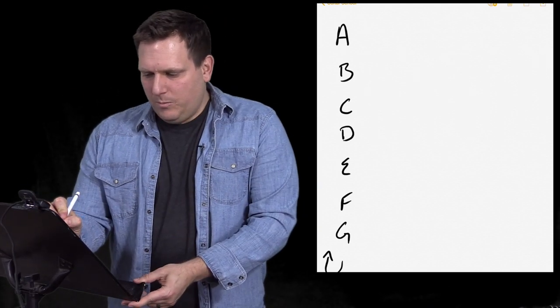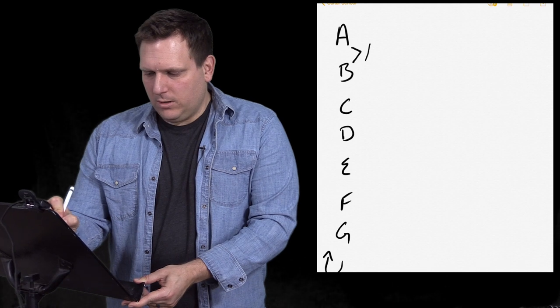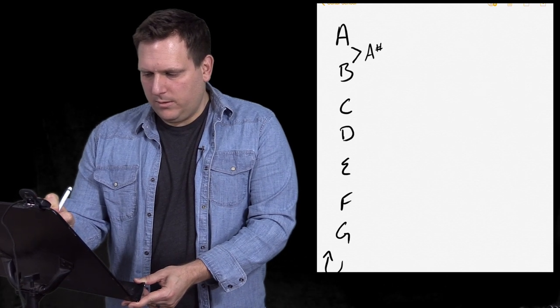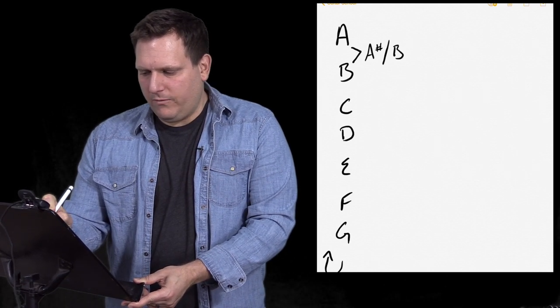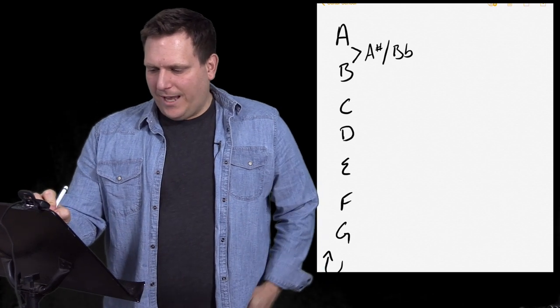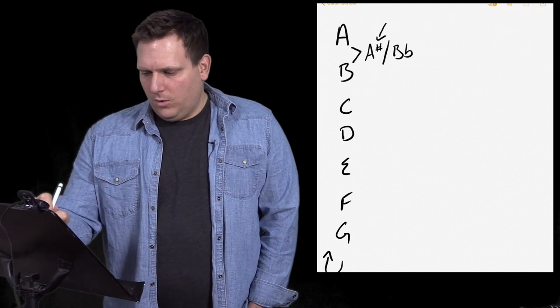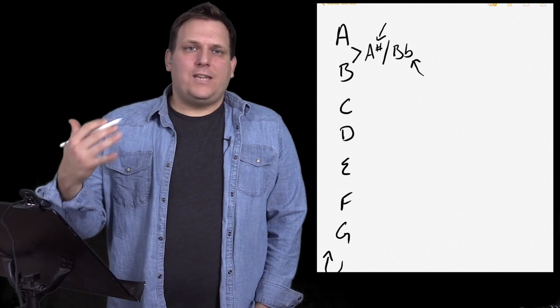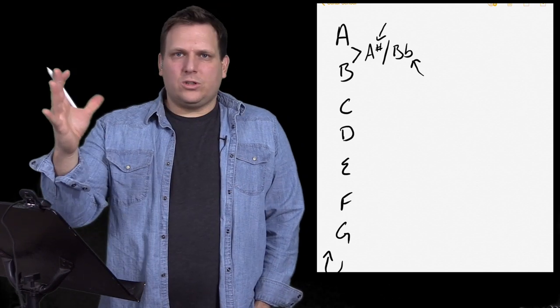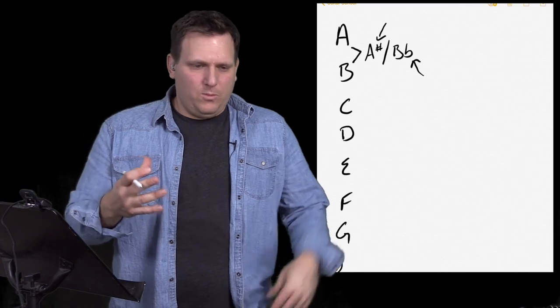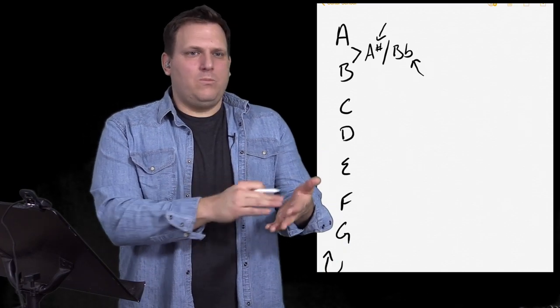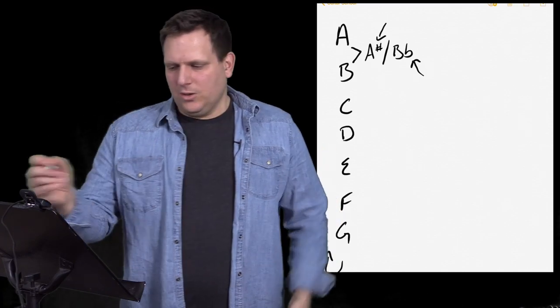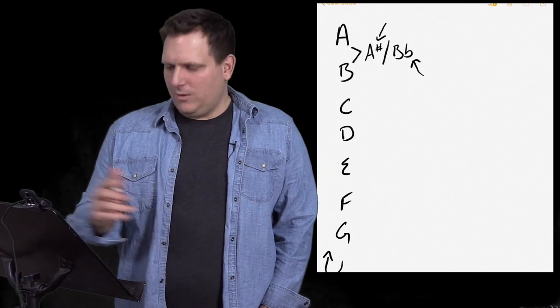Between the A and the B, there's a note called A sharp or B flat. Now, this little hashtag symbol right there, or this lowercase b, that hashtag symbol stands for sharp. And that holds true in any music. Even if you pick up a score from Beethoven or Bach back in the day, you'll see that little symbol. It's been around forever.